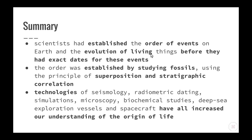In summary, scientists had established the order of events on Earth and the evolution of living things before they had exact dates for these events. The order was established by studying fossils using the principle of superposition — the oldest fossils are at the bottom, the youngest at the top — and stratigraphic correlation, which means using rocks of similar ages to see what fossils were present and working out relative ages. Technologies of seismology, radiometric dating, simulations, microscopy, biochemical studies, deep sea exploration vessels, and spacecraft have all increased our understanding of the origin of life. That brings us to the end of this video — thank you for watching.